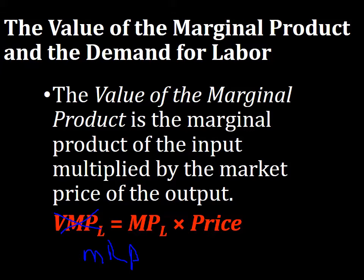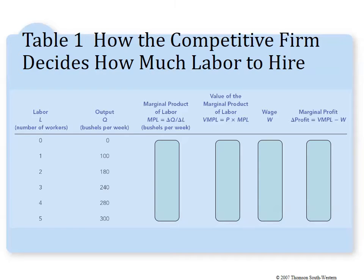To calculate MPL from the table: going from zero to one worker, output goes from zero to 100, so MPL is 100. From one to two workers, output goes from 100 to 180, so MPL is 80. From two to three, the change in output is 60; then 40; then 20. You can see diminishing returns at work as each additional worker adds less output.